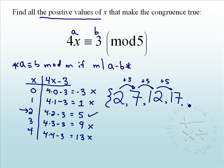4 is enough. We'll do dot, dot, dot to say, hey, there's more in there. And that's all of our solutions. 2, 7, 12, 17, so on and so forth.